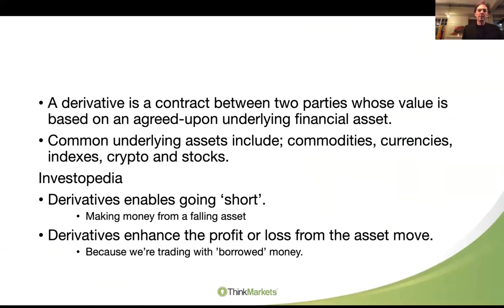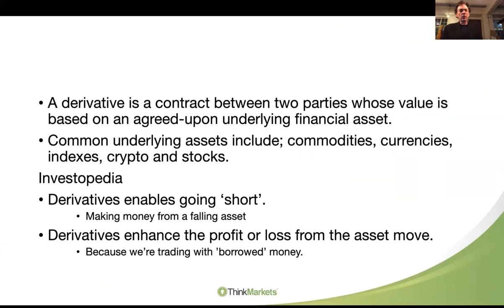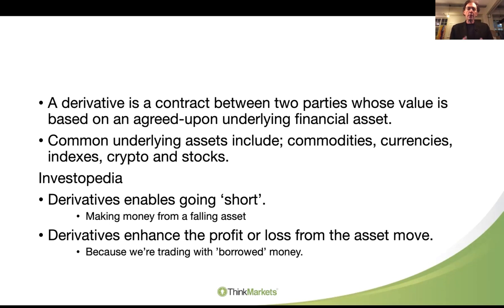A derivative is a contract between two parties on an agreed upon underlying financial asset. Those assets would typically be commodities, shares, indices, currencies, crypto - it can be almost anything. Essentially it's two parties who agree upon this transaction. They enable you to go short - in other words, you make money from a falling asset price. And they enhance the profit or the loss from the asset's move, because we're trading with borrowed money. That's the margin deposit that we put down.